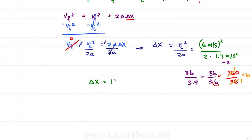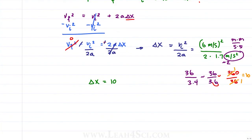Delta x equals approximately 10 meters. Checking units: meters per second squared — squaring gives meters squared over seconds squared — divided by meters per second squared cancels seconds squared and one set of meters, leaving just meters as expected. While this problem had a lot of math, it was pretty straightforward once set up systematically.